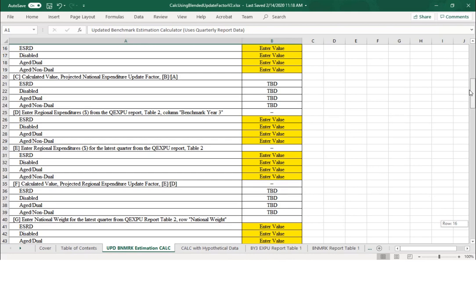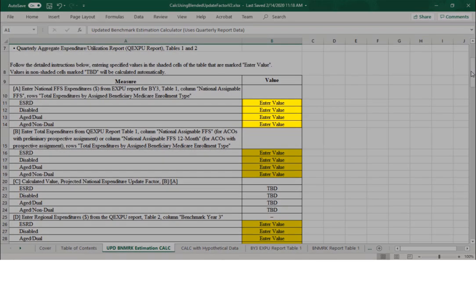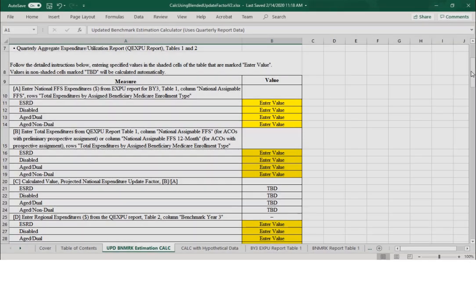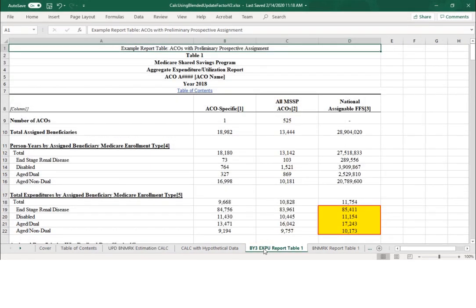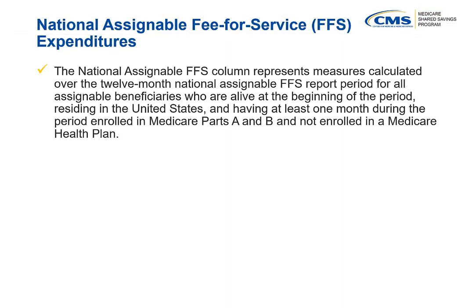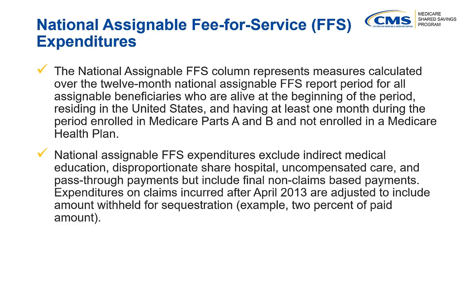Starting with Section A of the calculator, we'll enter values for the National Assignable Fee-for-Service Expenditures for Benchmark Year 3 for each of the four Medicare enrollment types. These values can be found in the Benchmark Year 3 Aggregate Expenditures and Utilization Report Table 1. The National Assignable Fee-for-Service column represents measures calculated over the 12-month report period for all assignable beneficiaries who are alive at the beginning of the period, residing in the United States, and having at least one month enrolled in Medicare Parts A and B and not enrolled in a Medicare health plan.